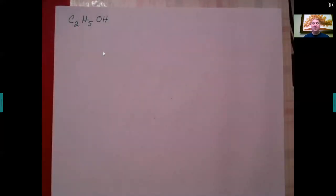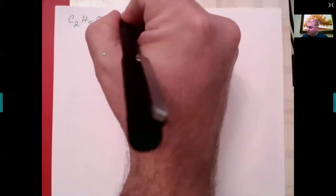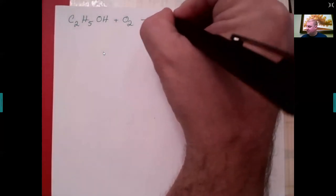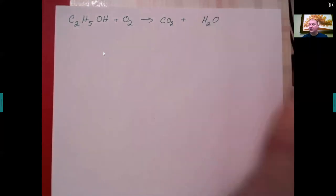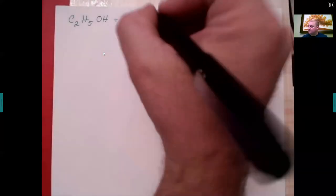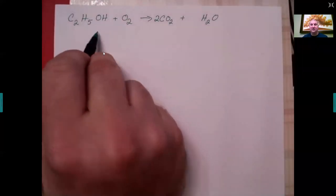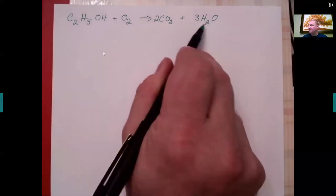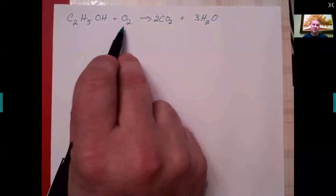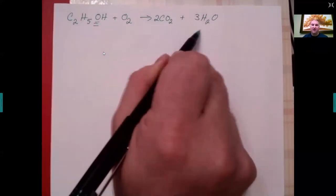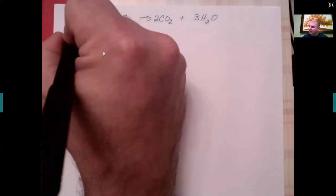Ethanol is a common additive to fuels to make them greener by making better use of renewable energy. When we react ethanol with oxygen, that's a combustion reaction — we always form carbon dioxide and water. To balance it: there are two carbons, so we need two CO₂; six hydrogens, so we need three waters. That gives seven oxygens on the right, but ethanol already contributes one oxygen, so we only need six from O₂, giving a coefficient of three.